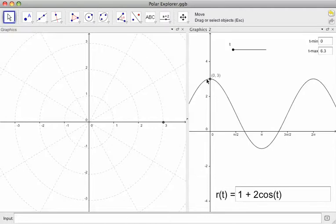And what I'm doing is I've created the rectangular graph, and I put a point on it. So right now it's at 0, 3. So r is 3, because r is vertical, and t is 0. T is the horizontal on this graph.